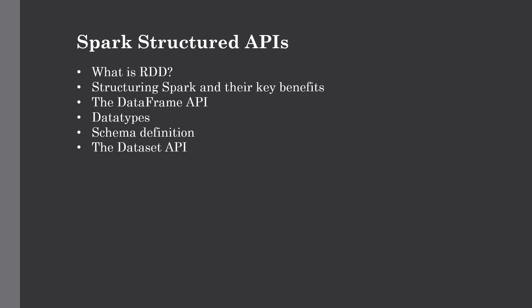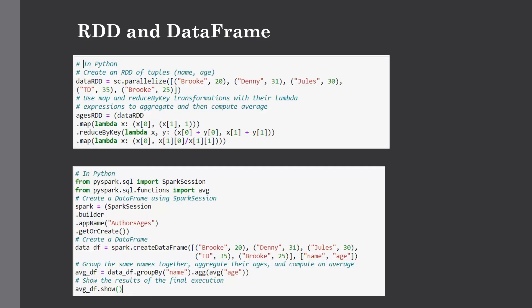The structure provides a number of benefits including better performance and space efficiency across Spark's architectural components. Let's explore some of the benefits when using DataFrames and Datasets instead of RDDs. We will talk about expressivity, simplicity, and uniformity in code — and compare Spark code between RDD and DataFrame. As you can see in this figure, we have a simple example of creating an RDD and applying some logic, and in the next one, creating a DataFrame and doing some transformations.